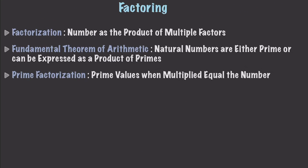Factorization is just writing a number as the product of multiple different factors. For example, if you had 6, factorization would be converting it into 3 times 2. The fundamental theorem of arithmetic says that all natural numbers are either prime numbers or can be expressed as a product of prime numbers. Specifically, prime factorization is finding the prime values that, when multiplied together, equal a number.